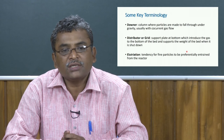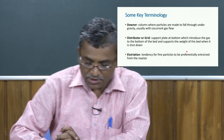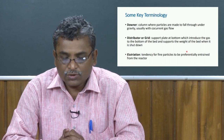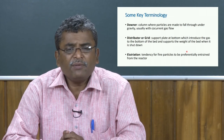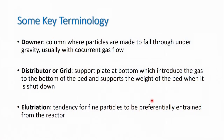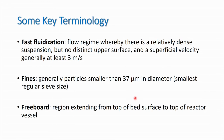The distributor supports the weight of the bed when it is shut down and consists of holes that determine the size of the bubbles formed inside the fluidized bed. Different types of distributors are used based on the required bubble size. Elutriation is the tendency for fine particles to be preferentially entrained from the reactor. Fast fluidization is a flow regime of the fluidized bed whereby there is a relatively dense suspension but no distinct upper surface, and a superficial velocity of generally at least 3 m/s is maintained.